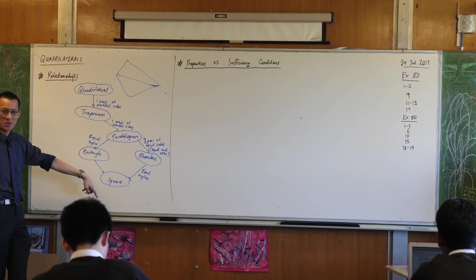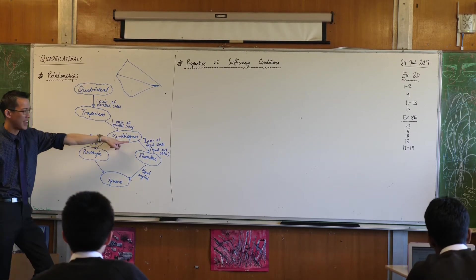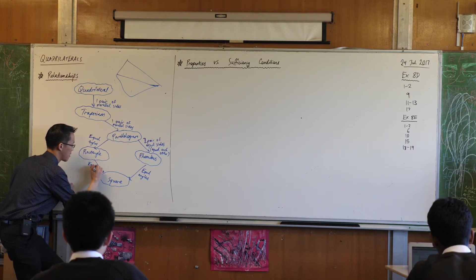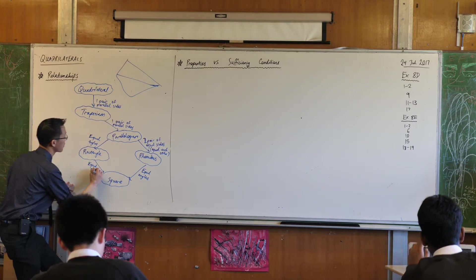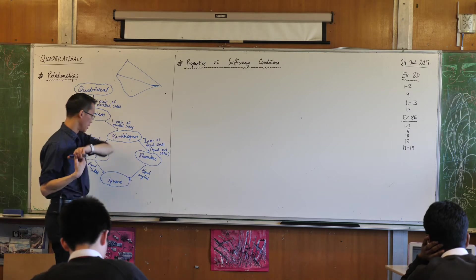How do you get from a rectangle to a square? What do you add? Yeah, it's the equal sides thing that we were talking about before. Okay, now we're almost done.